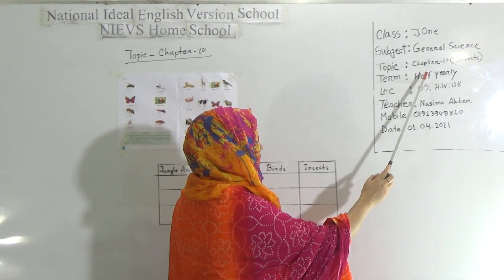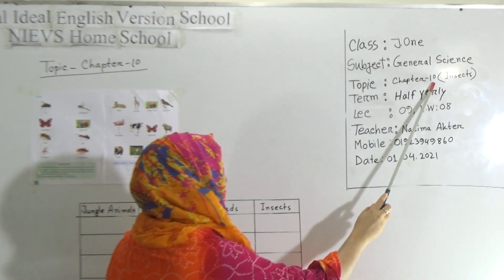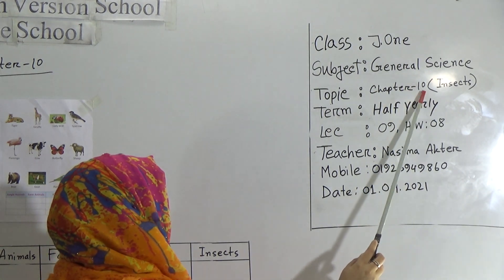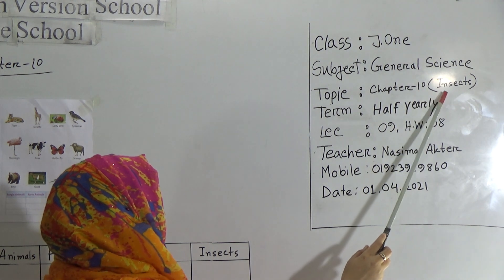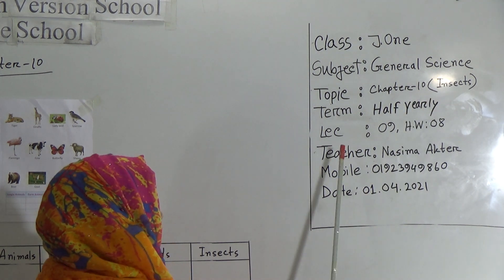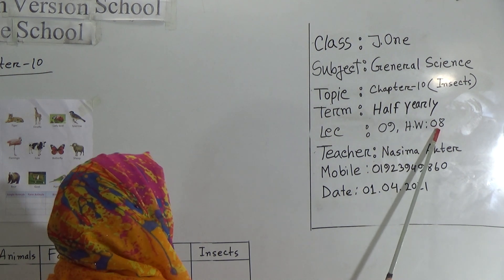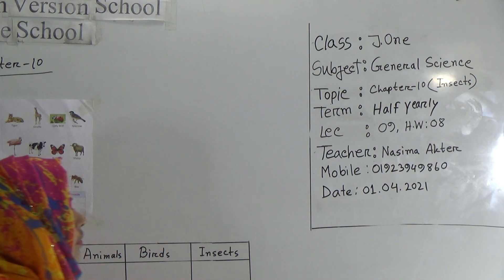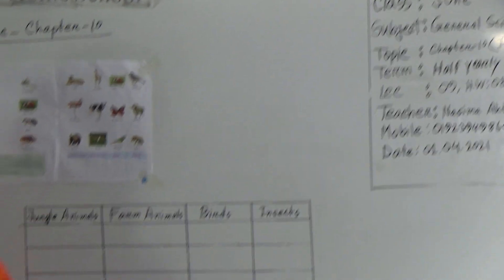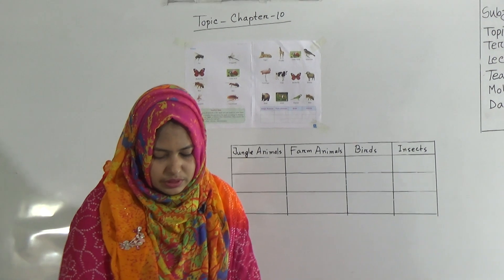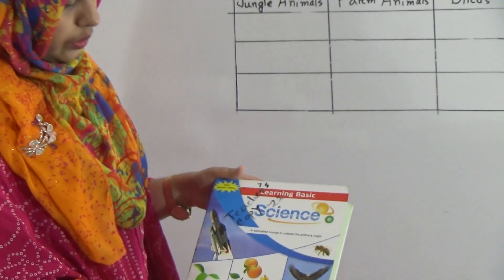Our today's topic is Chapter 10. In our previous class we have already learned jungle animal and farm animal. Today we will learn insects of this chapter. This is lecture number 9 and our today's SW number is 8. Students, this is your science book and our today's topic is here.